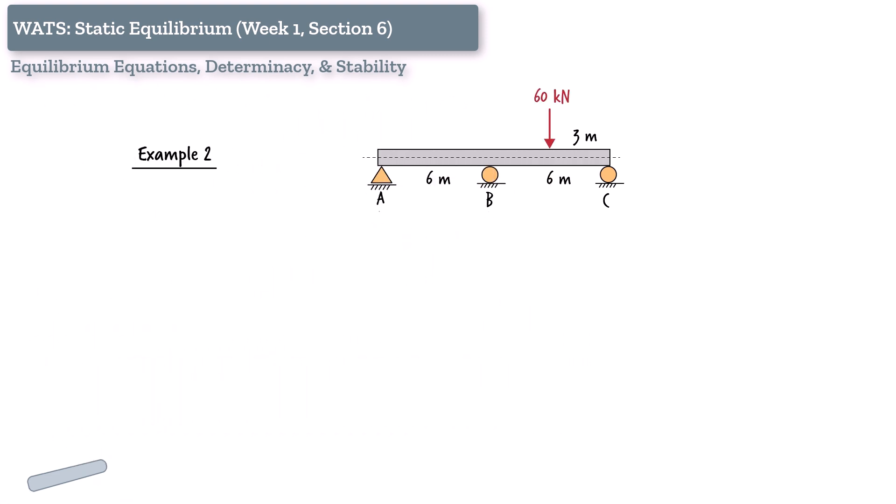Example 2. Pin and two rollers. Let's consider a beam supported by a pin at one end and two rollers at other locations along its length. The pin provides two reactions, one vertical and one horizontal. Each roller provides one vertical reaction force. That gives us a total of four unknowns, one horizontal and three vertical reaction forces.